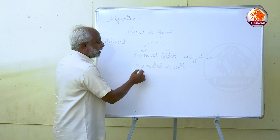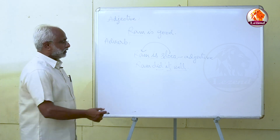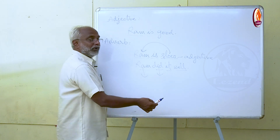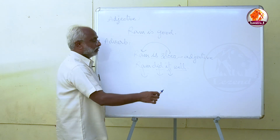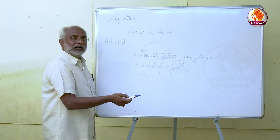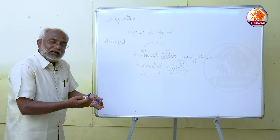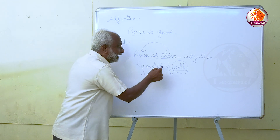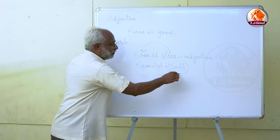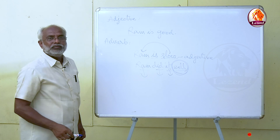Ram did it well. Ram is a noun, 'did' is the verb, 'it' is a pronoun, and 'well' — Ram did, I did, Sita did, but Ram did well. So this 'well' adds something to the verb.